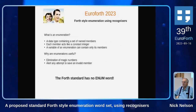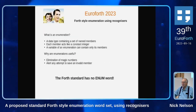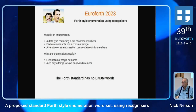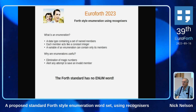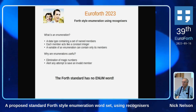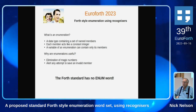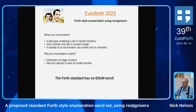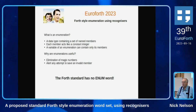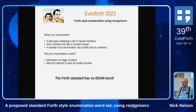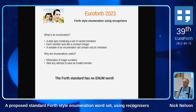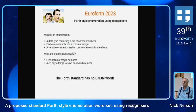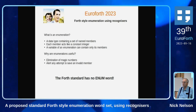Just reviewing what an enumeration is: it's basically a data type which contains a set of named members. When you use one of those members, they act like a constant integer. And if you create a variable which has a type of an enumeration, then that variable should contain only one of its members.